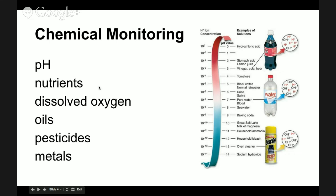We can also look at nutrients like phosphorus and nitrogen, which help us predict whether we're in danger of an algal bloom or if a farmer started using more nutrients. We can look at dissolved oxygen, which all animals living in aquatic systems really need — a healthy ecosystem has to have sufficient dissolved oxygen. You can also look at more specific things depending on your question, like oils, pesticides, and metals.